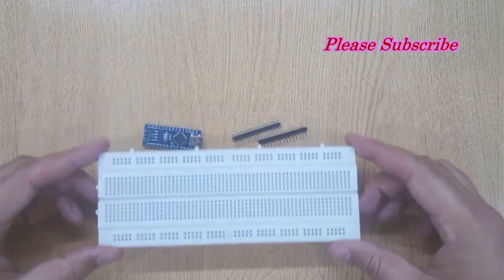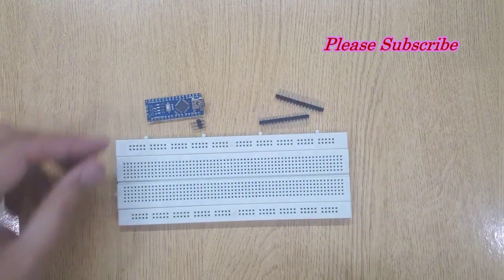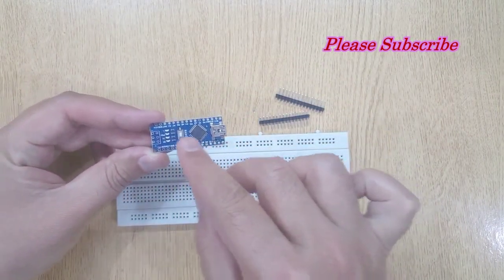To solder these pins, we will need a breadboard. You can see there are 15 holes in each side of this Arduino Nano.